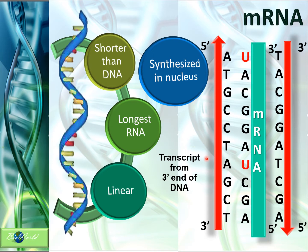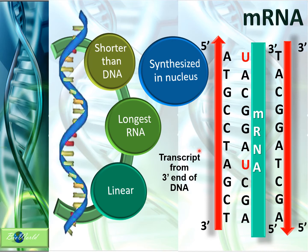The transcription process involves enzymes that will transcribe the genetic code of the DNA from the 3' end to the 5' end. You can notice there is complementary base pairing between the DNA molecule and the mRNA molecule. For example, when there is thymine on the DNA, there is adenine on the RNA. When there is cytosine on the DNA, there is guanine on the RNA. This is how the mRNA is synthesized in the nucleus through the process of transcription.